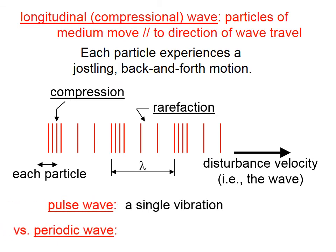Two more definitions: a pulse wave consists of a single vibration, and a periodic wave consists of rhythmic, repeated vibrations. With a rope attached to the wall, a pulse wave would be where we shake the end of the rope up and down once. In a periodic wave, we shake the end of the rope up and down repeatedly.